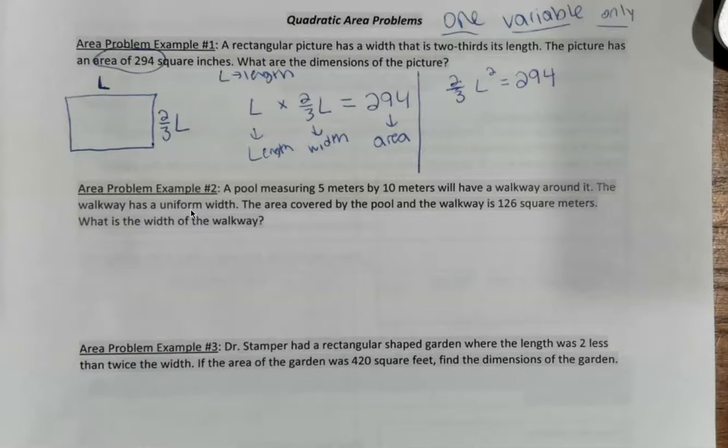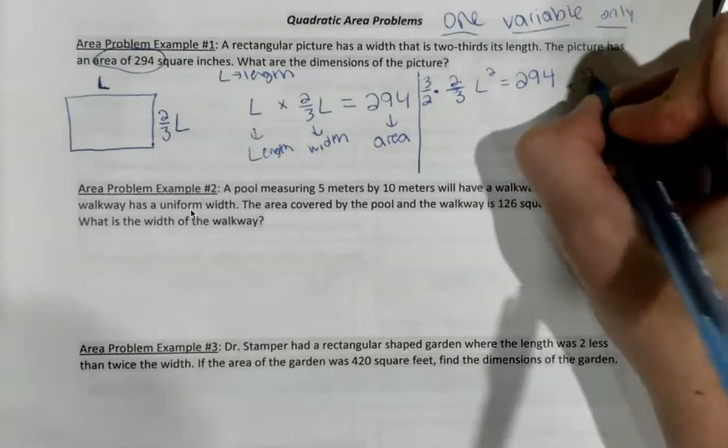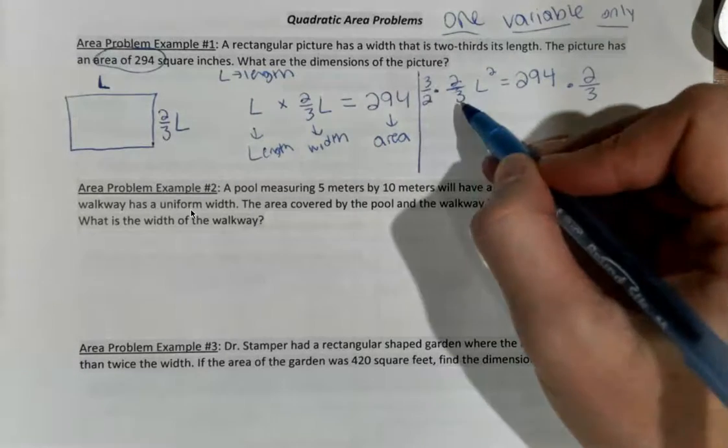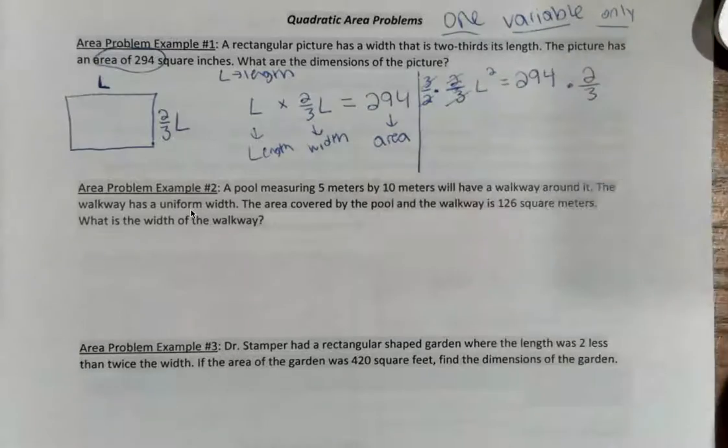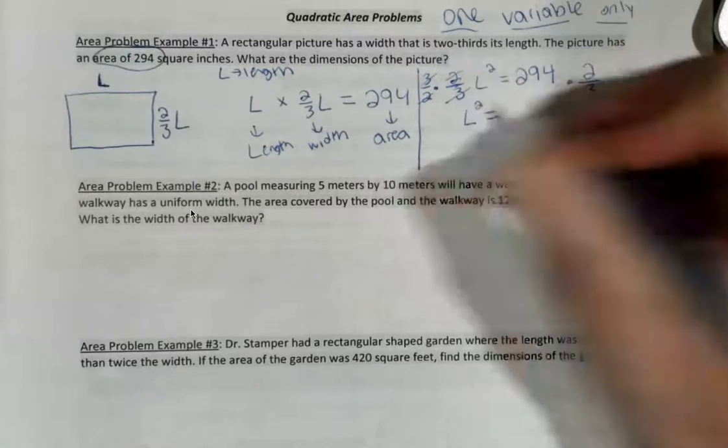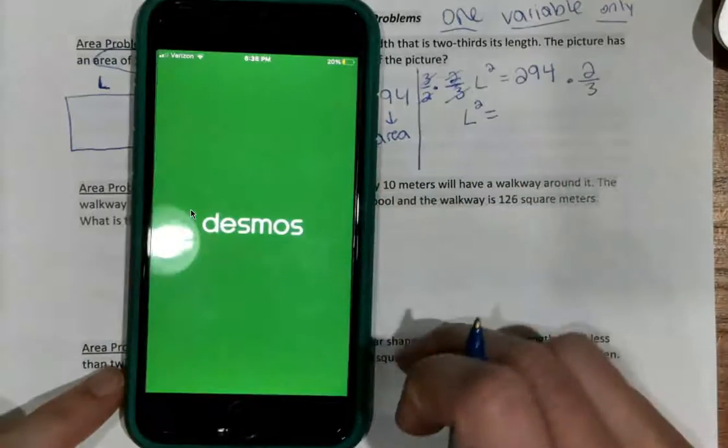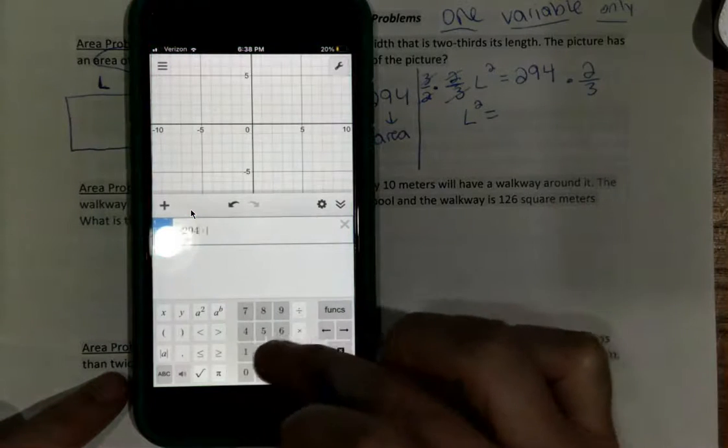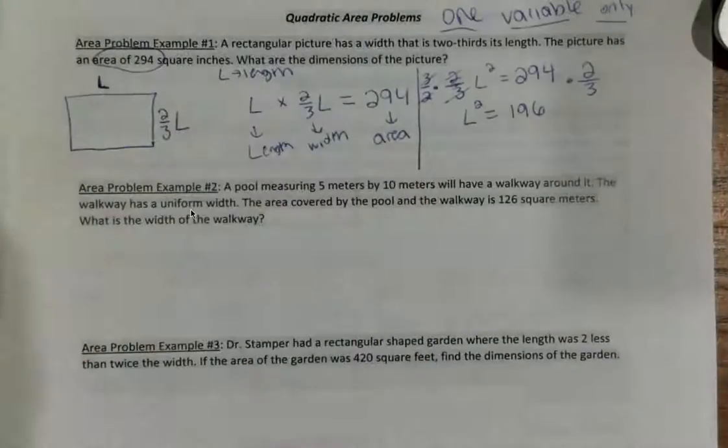When I multiply this out, one times two-thirds is just going to give me two-thirds. And then L times L is going to give me L squared. I hate fractions. I'm sure you do, too. I want to get rid of them. We talked about it at the beginning of fall semester. It's multiplying by the reciprocal. I can get rid of the fraction by multiplying both sides by the reciprocal. So, the reciprocal of 2 over 3 is 3 over 2. I'm going to do 294 times 3 over 2, and I end up getting 441.